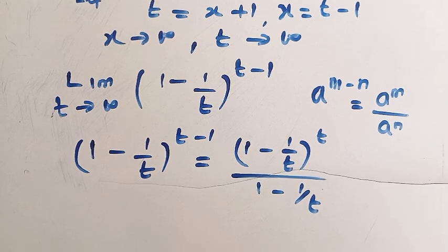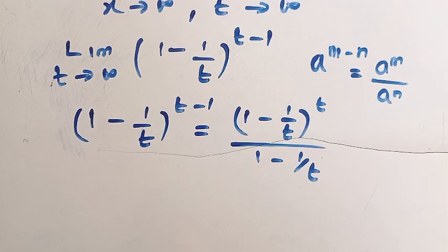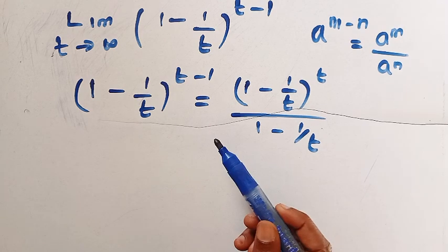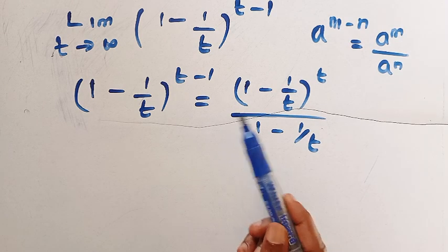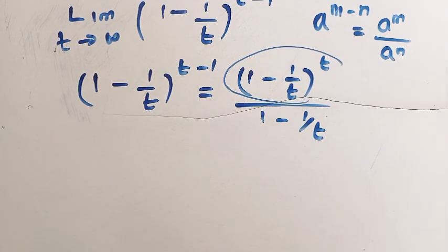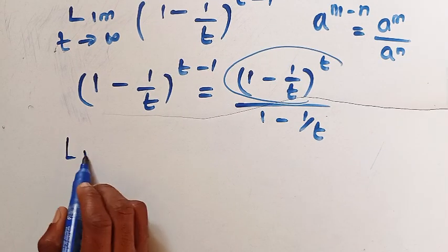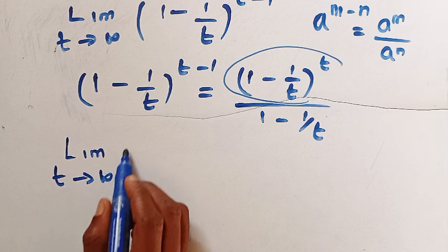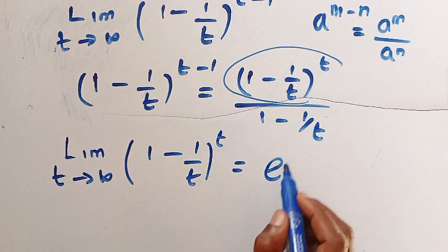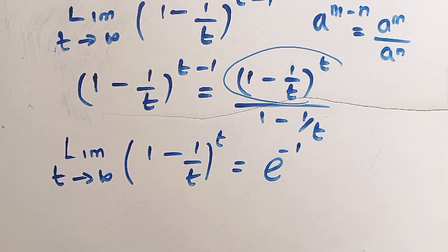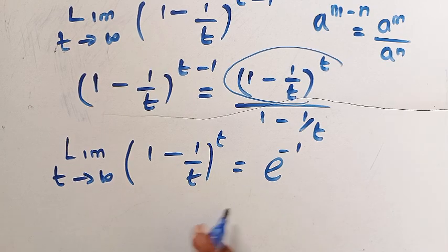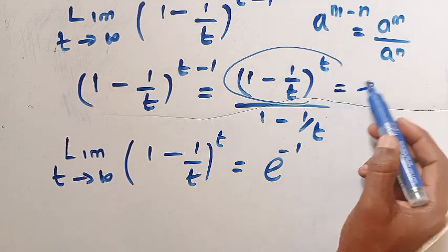Taking this back into the limit function, if we consider the limit of 1 minus 1 over t raised to the power of t, this is one of the standard constant limits. The limit as t approaches infinity of 1 minus 1 over t raised to the power t gives us e raised to the power of minus 1. If we had a plus, we would get just e.